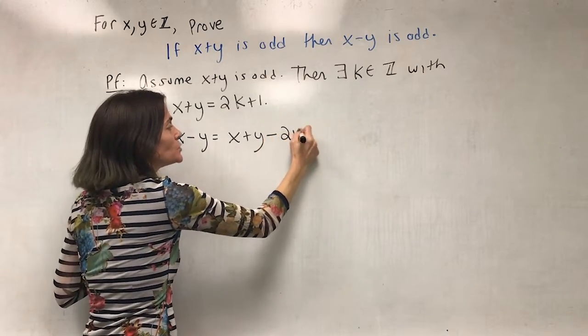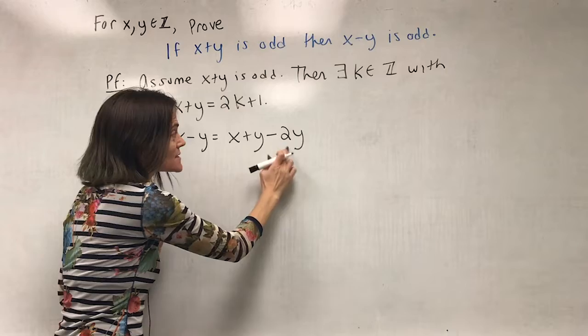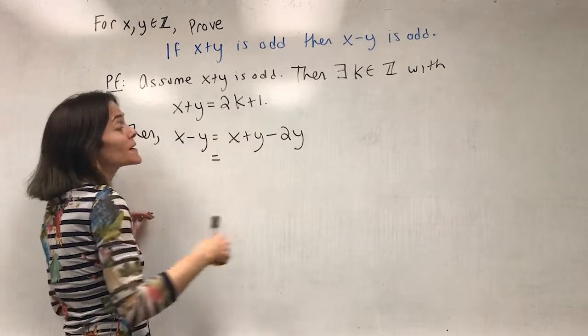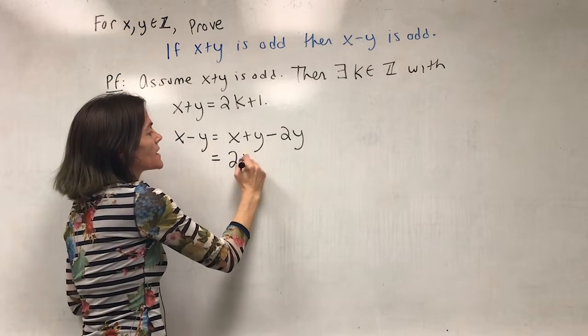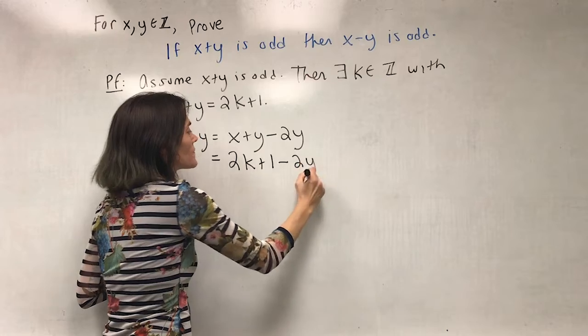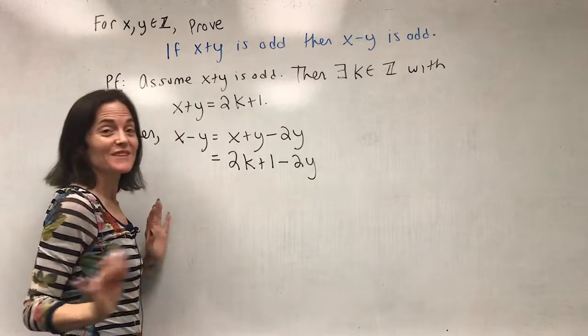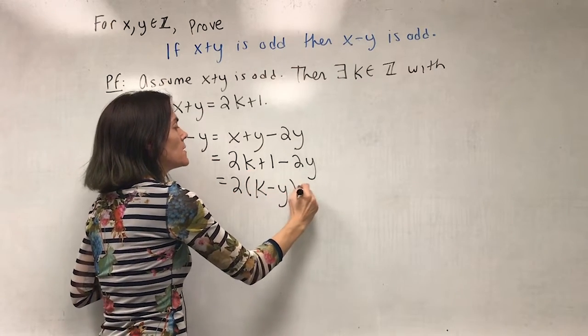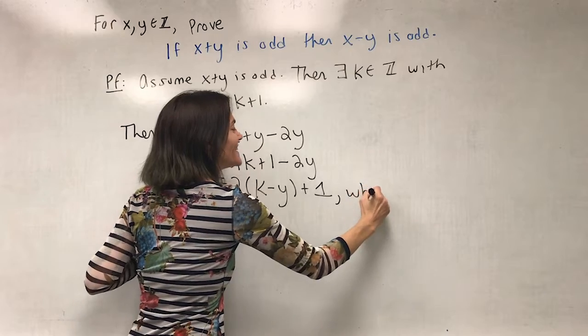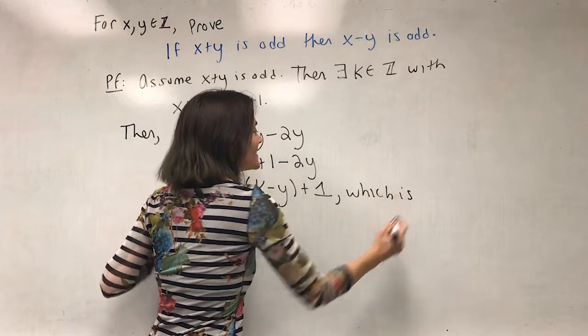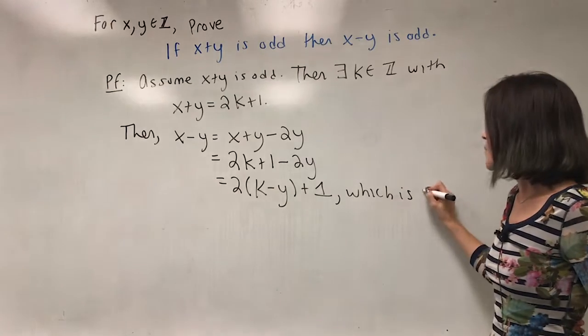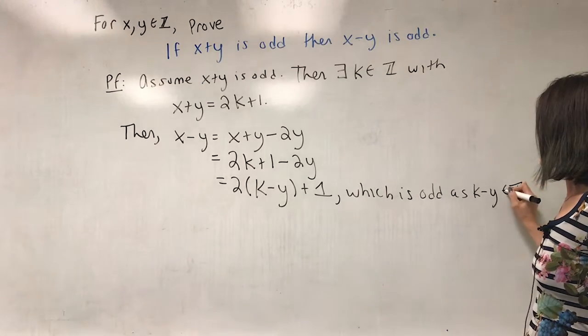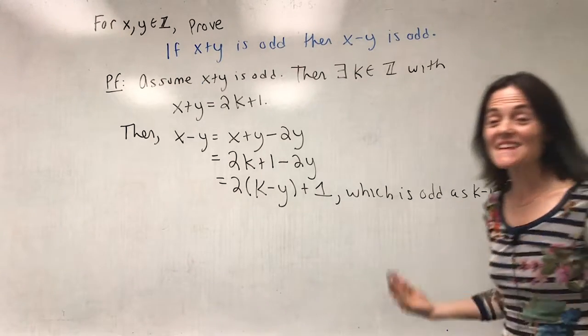It's x plus y, and then subtract off 2y. If you add these two, you certainly get x minus y. I can fill in what I know about x plus y. That is 2k plus 1. I can factor 2 out here, and I have k minus y plus 1, which is odd, because k minus y is an integer. This completes the proof.